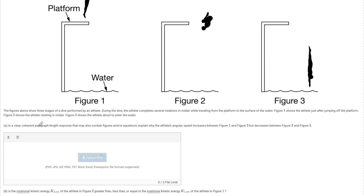Let's start with part A, which asks for a clear, coherent paragraph-length response. Whenever we deal with clear paragraph-length responses that have figures and equations, we need to list all the variables that might be in play in rotation and make sure we talk about each one. I'll list some: there might be some torque equal to F times R, and torque also has the formula I alpha — moment of inertia times angular acceleration. And if I have something rotating, it has angular momentum L, which equals I times omega.